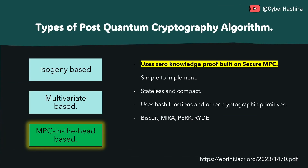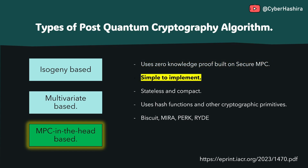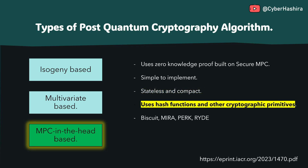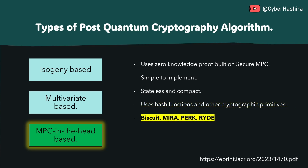The next type is MPC-in-the-head, where MPC stands for multi-party computation. It is a technique that allows multiple parties to jointly solve a problem while keeping their inputs secret. MPC-in-the-head builds on this technique to provide zero-knowledge proofs. A zero-knowledge proof is a cryptographic method in which one party proves to another that they possess a certain secret without actually revealing that secret. Compared to other algorithms, the MPC-in-the-head technique is much simpler to understand and implement. It is also a stateless cryptographic technique that relies on compact proofs for efficiency and uses secure hash functions and well-known cryptographic primitives.